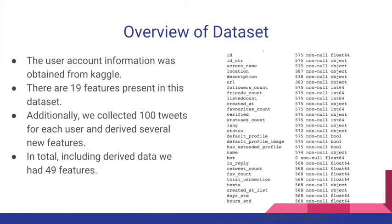For the dataset, the user account information was obtained from Kaggle, which contains 19 features. Additionally, we collected the last 100 tweets for each corresponding user, merged the two datasets, and obtained a total of around 49 features.